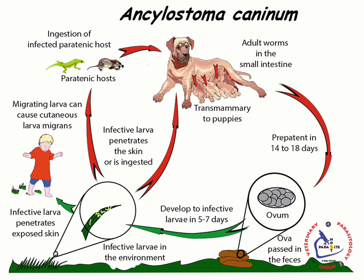As part of the transmammary route, L3 migrate to the skeletal muscle and remain dormant there for a period of time. About three weeks before parturition, they move to the mammary gland as L3, and the puppies are infected after consuming milk contaminated with L3.